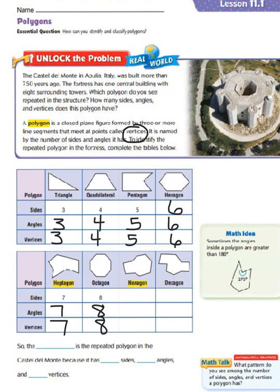Now something you're not going to hear very often — that's both the heptagon and the nonagon. The nonagon is something you're not going to hear very often. A nonagon has nine sides — one, two, three, four, five, six, seven, eight, nine. If it has nine sides, it's also going to have nine angles and nine vertices.